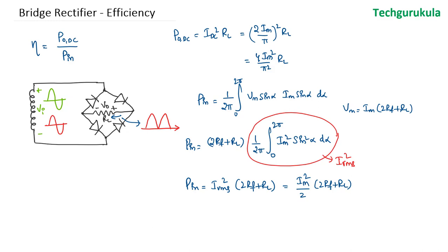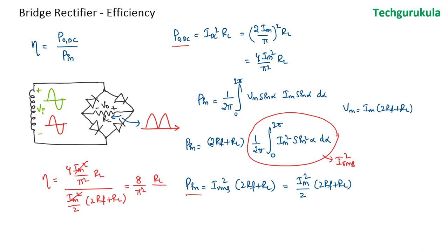Now that we have both the output DC power and the input power, let us find the efficiency. Efficiency equals the output DC power, 4Im squared over pi squared times RL, divided by the input power, Im squared over 2 times (2rf plus RL). The Im squared cancels, giving us 8 over pi squared times RL over (2rf plus RL). This value equals 0.81, meaning the maximum efficiency is 81%, assuming that 2rf is very small compared to RL.